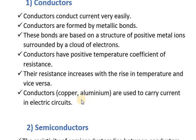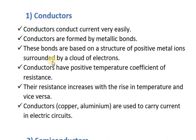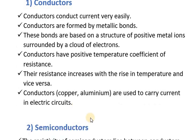Conductors like copper and aluminum are used to carry current in electric circuits. As conductors conduct current easily, there is very low opposition to electric current. Conductors are used to carry electric current in electric circuits, with very low opposition or losses. They are used in electric power systems for the purposes of distribution and power transfer.